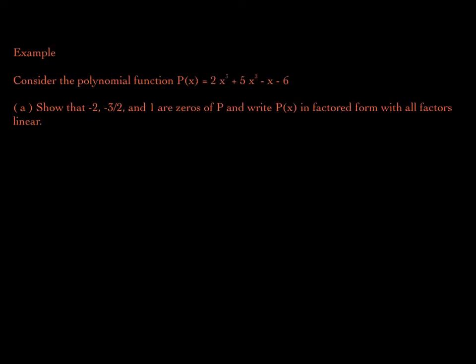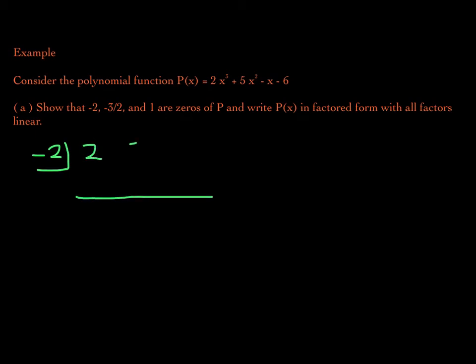Now check out this example. Consider the following polynomial function — a cubic: 2x³ + 5x² − x − 6. The first thing we want to do is show that negative 2, negative 3/2, and 1 are zeros of p. Then write p(x) in factored form with all factors linear. We're going to start with synthetic division to show that negative 2 is a zero, using the coefficients of the polynomial. We want to show the remainder is 0 when we divide.